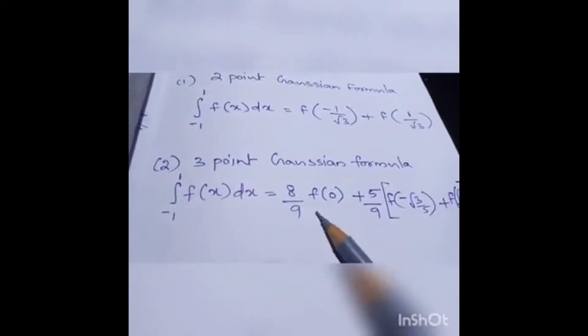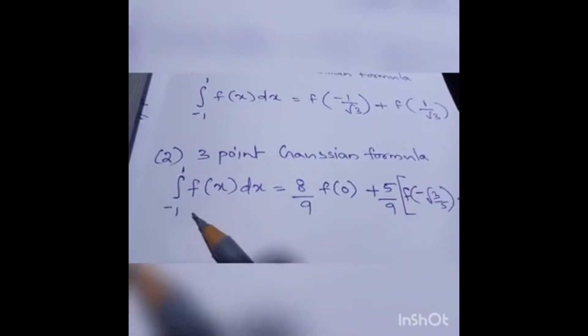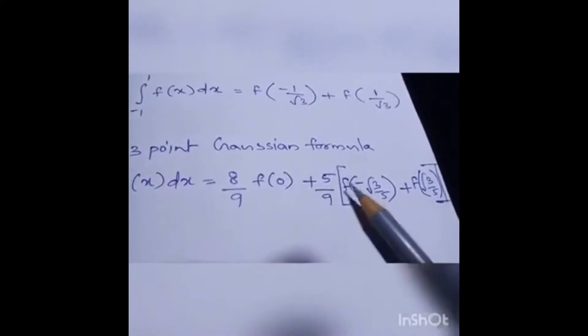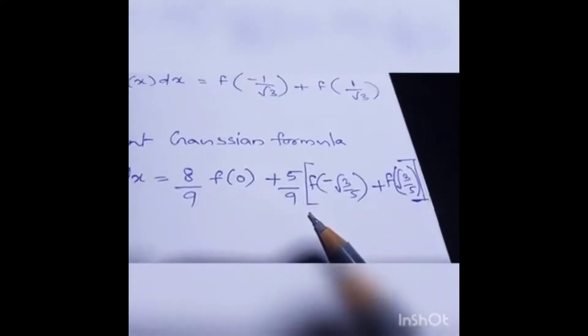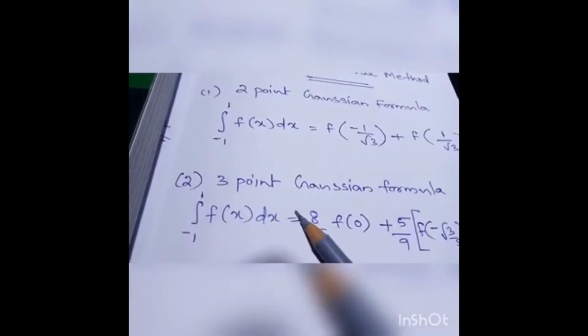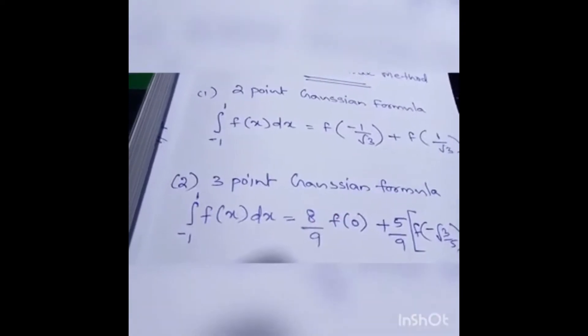The second one is the three-point Gaussian formula. That is: integration of minus 1 to 1 of f(x) dx is equal to (8/9) times f(0) plus (5/9) times f(minus square root of 3/5) plus f(square root of 3/5). So these are the formulas for the two-point and three-point Gaussian methods.